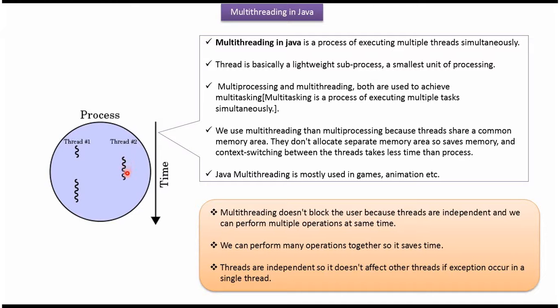Thread is basically a lightweight sub-process, a smallest unit of processing. Multi-processing and multi-threading both are used to achieve multi-tasking. Multi-tasking is nothing but a process of executing multiple tasks simultaneously.